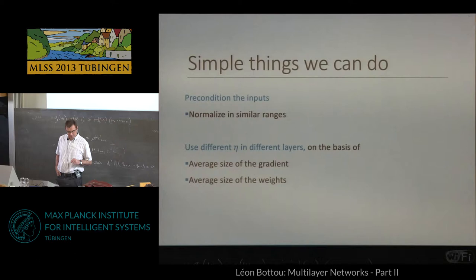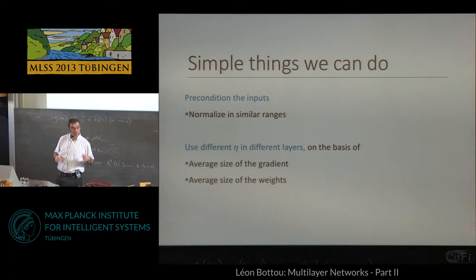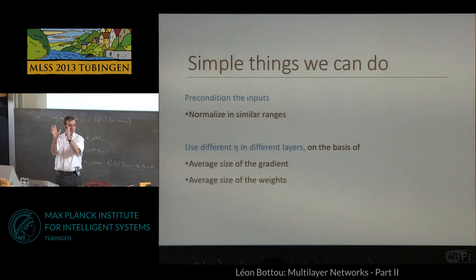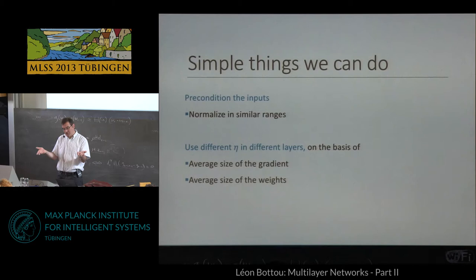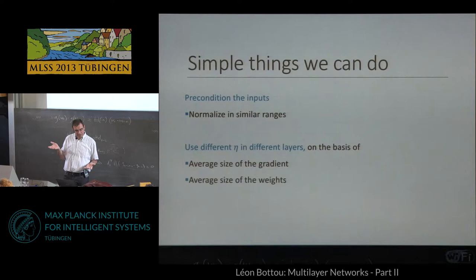There are simple things we can do: preconditioning the inputs — getting all inputs in the same range, same kind of statistics, same mean and standard deviation — minimizes the fact that balls are very skewed. You can use different steps in different layers, because a very dense layer with a lot of weights clearly has different curvatures than a small one. You can look at your network, look at the average size of the gradients in each layer, the average size of the weights, and compare them. If gradients are very high and weights are very small, you need a small learning rate there — otherwise you'll change them dramatically at every step.